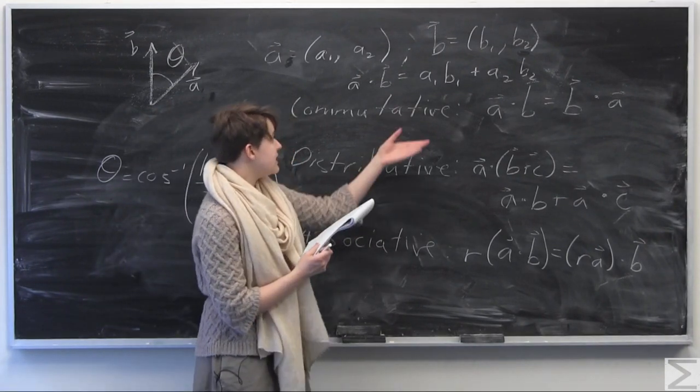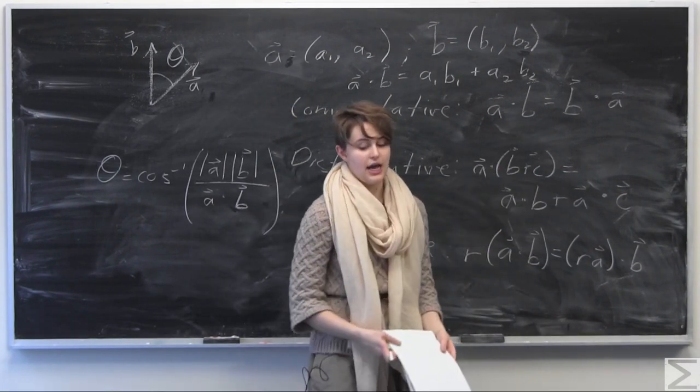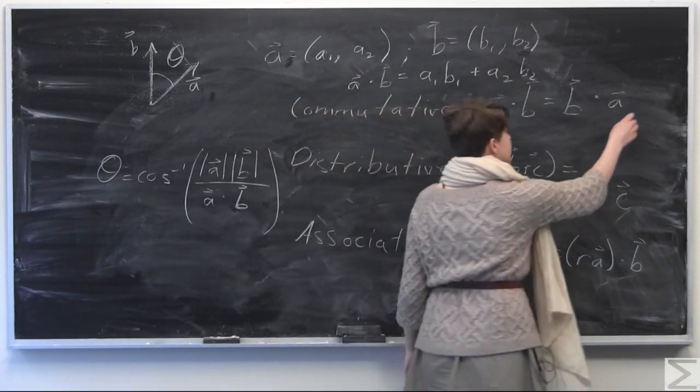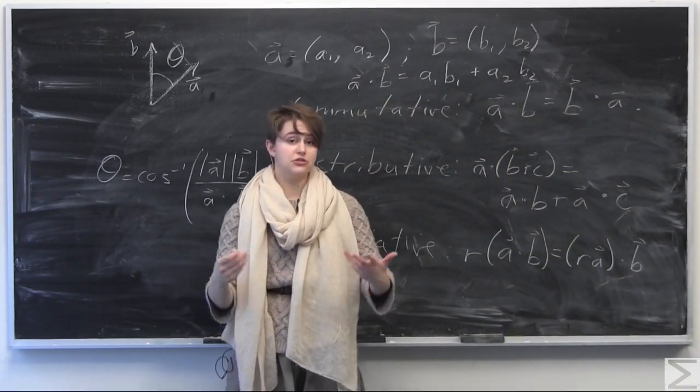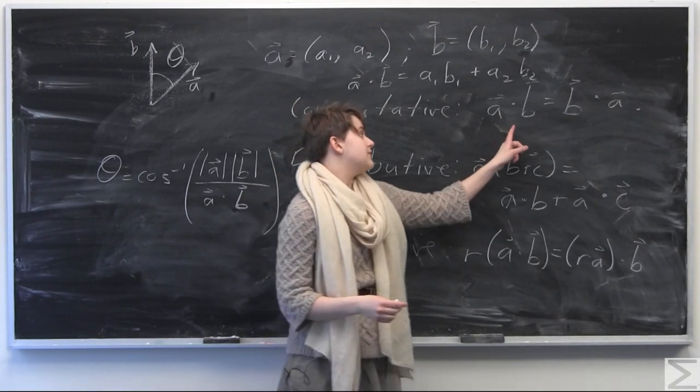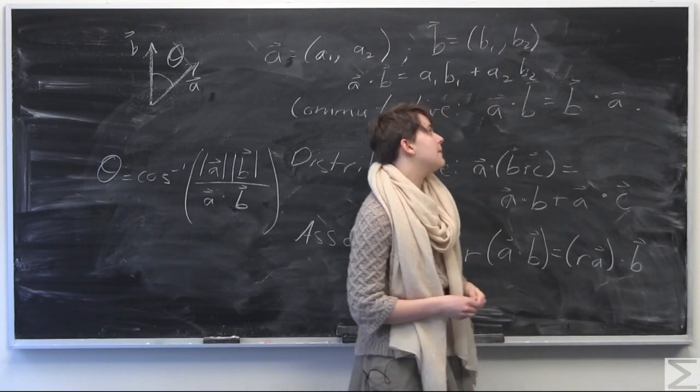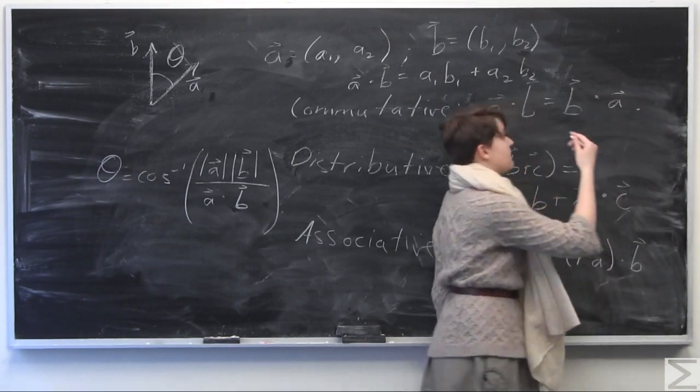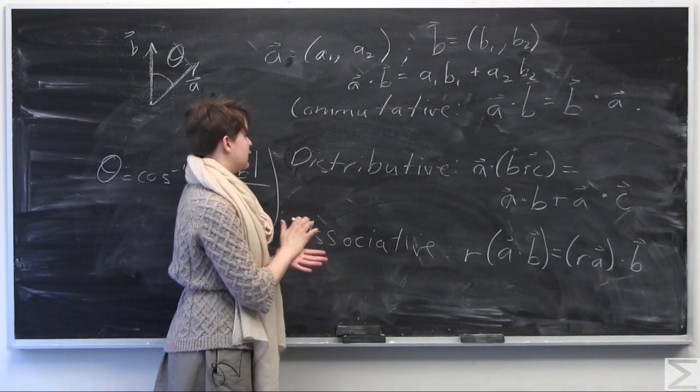And one of them is the commutative property such that we have A dot B is going to be equal to B dot A. This is very important because the result of the dot product, also known as a scalar product, is going to be a scalar or just some kind of number. When we take the cross product, it's going to be a vector. So it's very important for us to know here that taking A dot B is going to be equal to B dot A. And this only applies for the dot product. The cross product is, in fact, anti-commutative, but I will get in a different video that is explained.